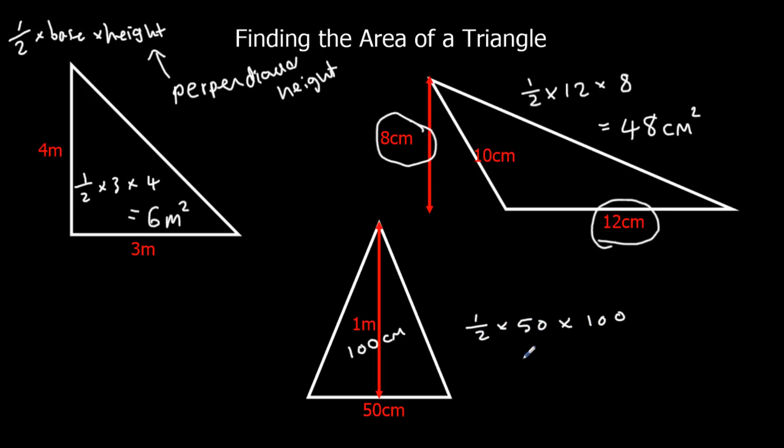Half times 50 is 25. So now I've got 25 times 100. And 25 times 100 is 25 with two zeros on the end. So 2500 centimeters squared.